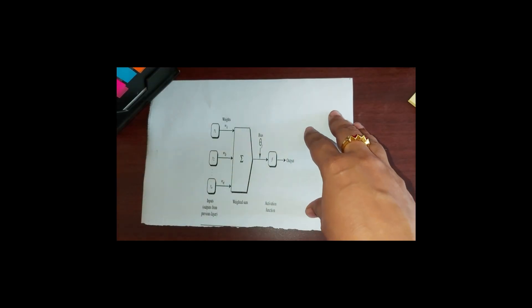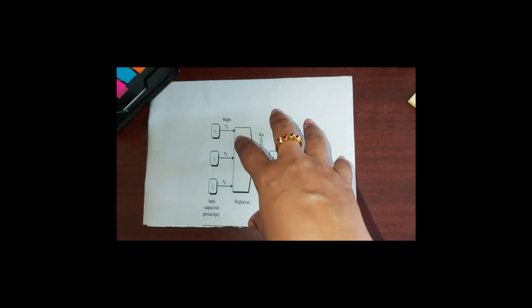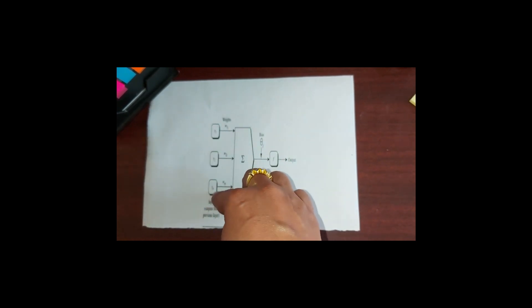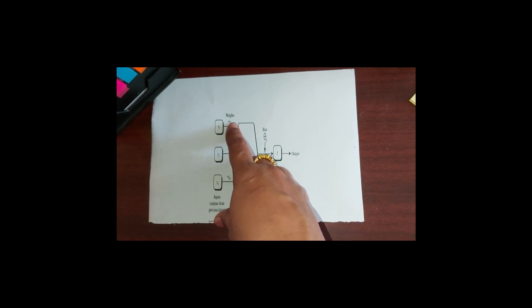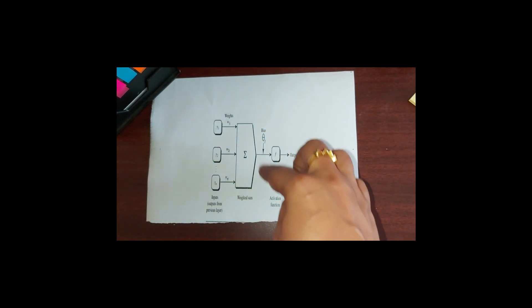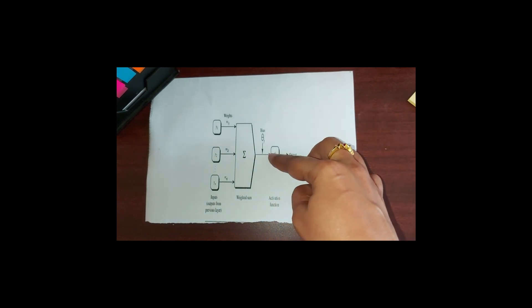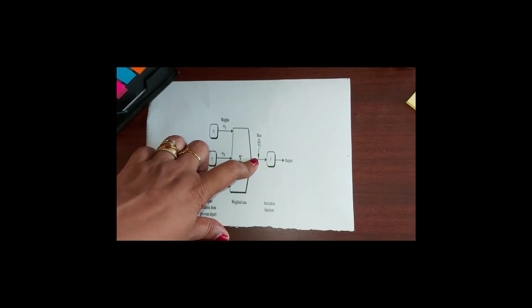This diagram shows the explanation. Like whatever the input is coming from the previous layer, that will be the output here. This output will be multiplied with the weight and this weighted sum will be added with some bias associated with unit j.